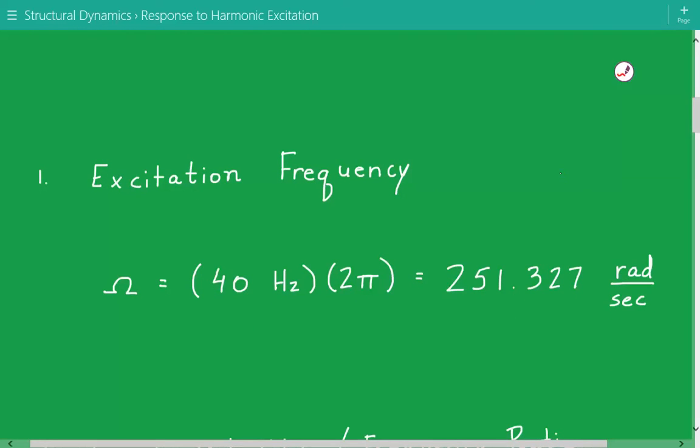So the excitation frequency, meaning the vibration frequency of the console, is 40 Hertz. We multiply by 2 pi to get into radians per second, and that's 251.327 radians per second.